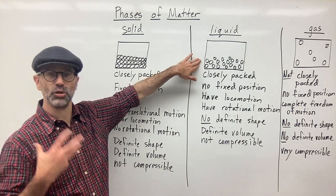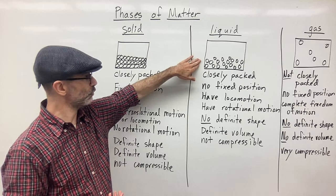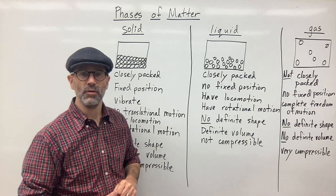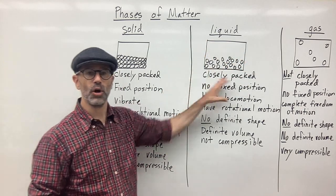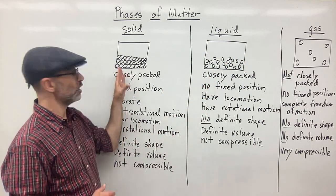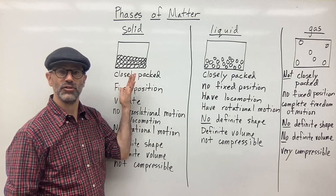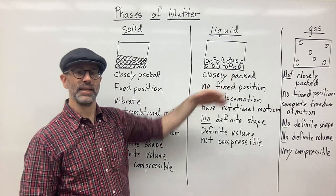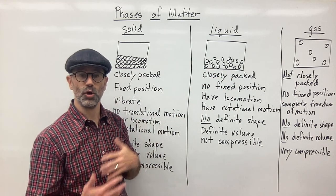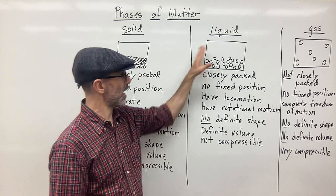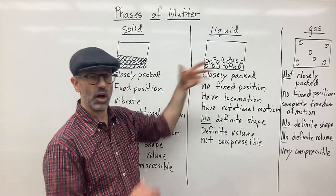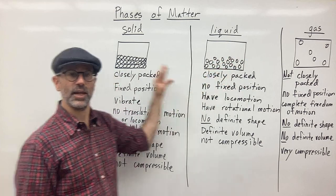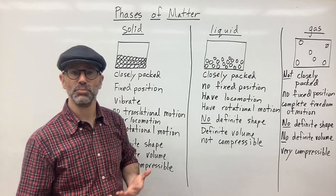Going to the particle, the atomic view, the molecular view here, we can see that the particles are still closely packed together. However, they have much more freedom to move. In solids, the only motion is vibrational motion. They can vibrate. In liquids, not only can they vibrate, but they can move from place to place. That's locomotion or translational motion. They can move around and they can also rotate. So they have rotational motion. They have more freedom of movement here than in solids. This allows them to have different properties.